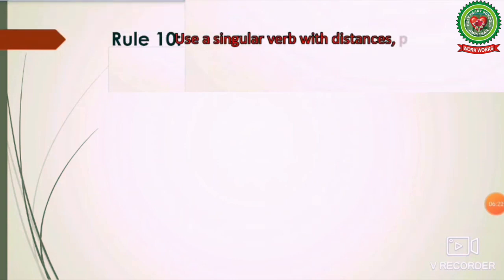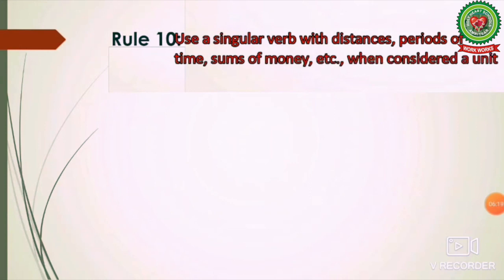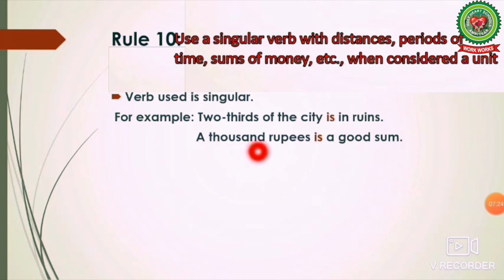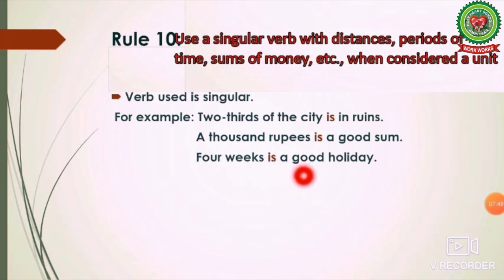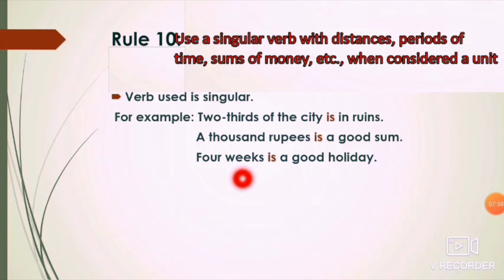Use a singular verb with distances, periods of time, sums of money, etc., when considered as a unit. For example: 'A thousand rupees is a good sum.' We never say 'a thousand rupees are a good sum' because it is considered a singular subject, so the singular verb 'is' is used. 'Four weeks is a good holiday.' Even though 'four weeks' sounds plural, it is used as a singular subject, so 'is' is used — not 'are.'